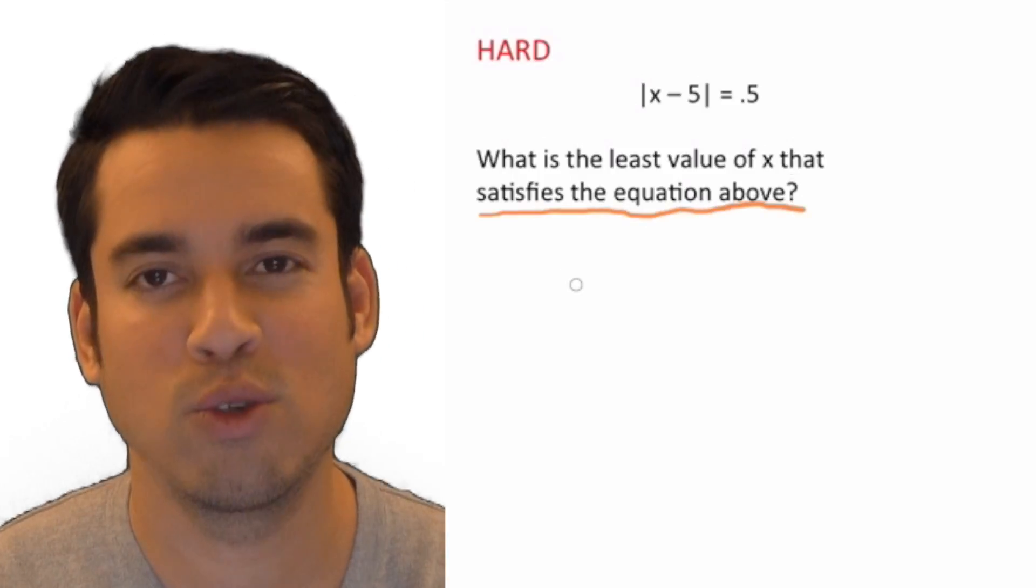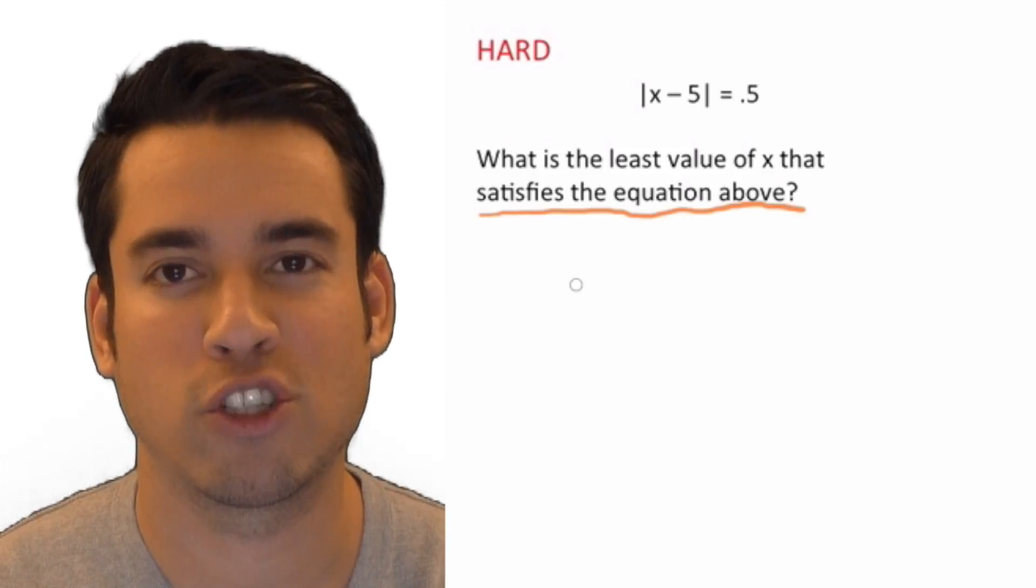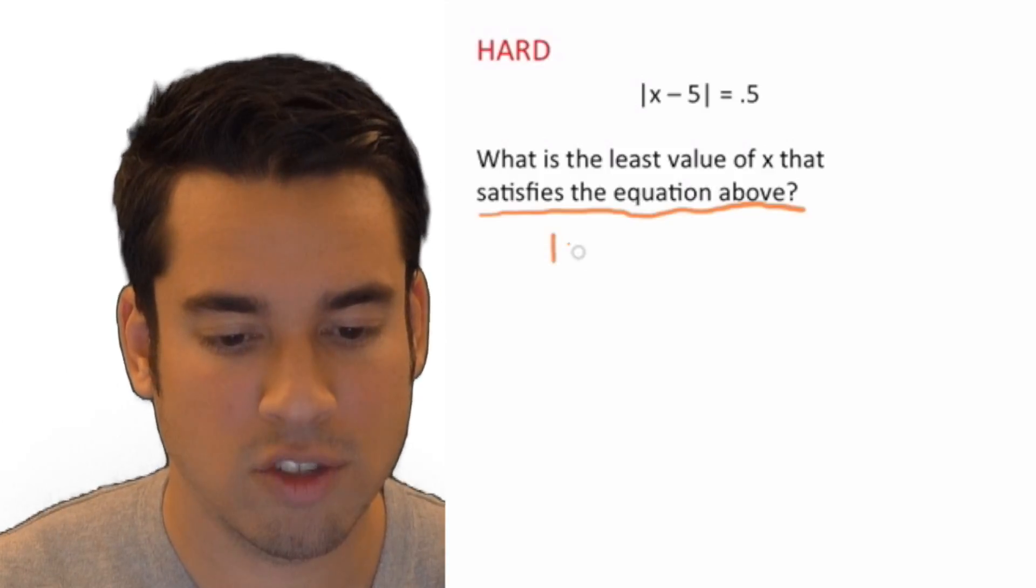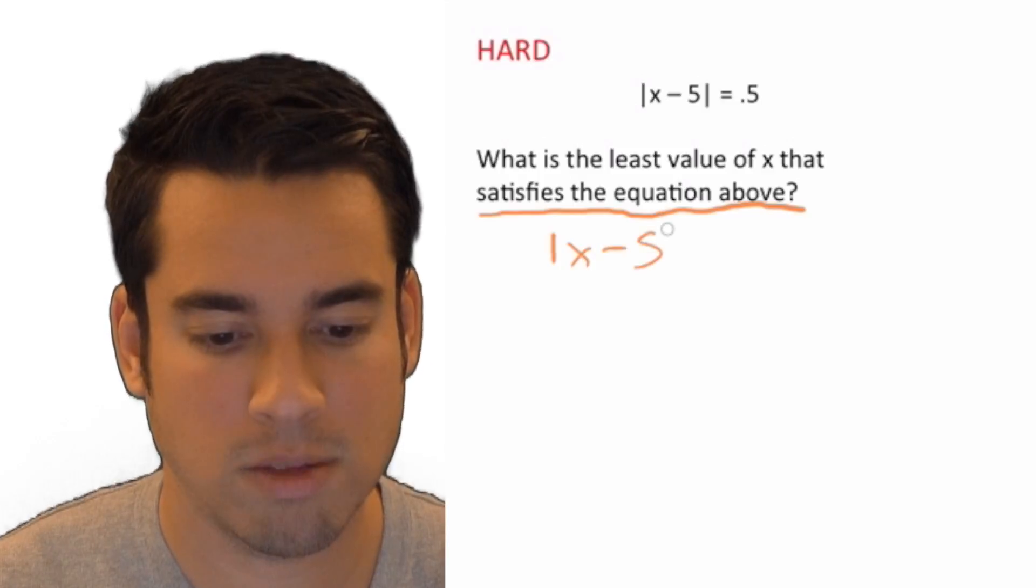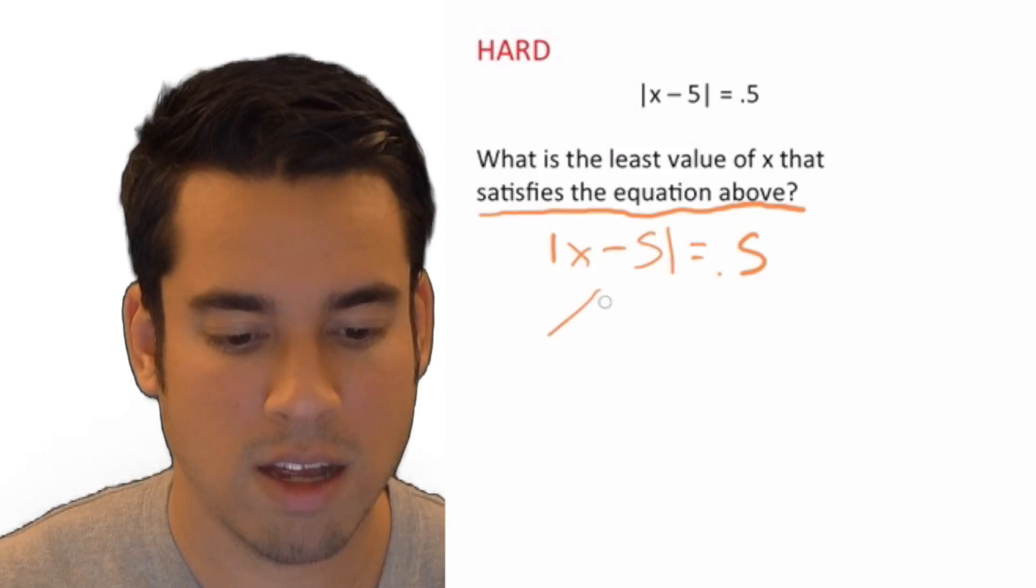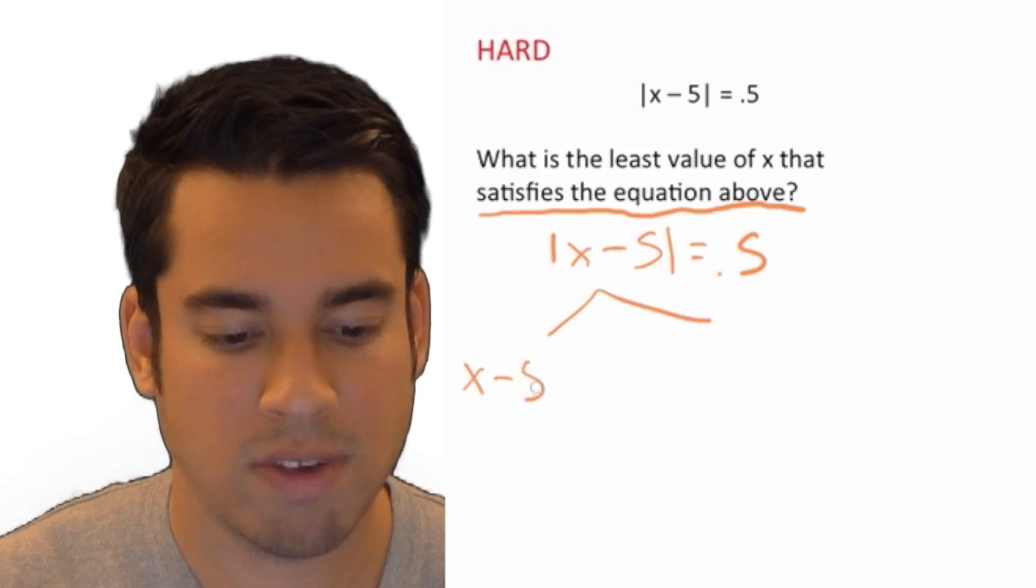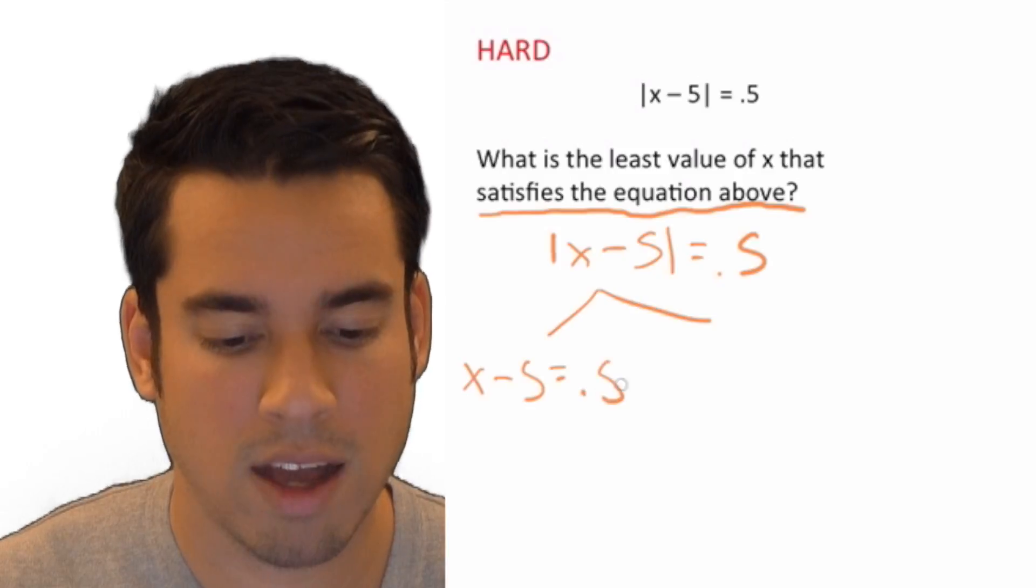So what are we going to do? Just like any absolute value function, we're going to solve it. So that means splitting it into two equations. So we've got x minus 5 equals 0.5. So let's split this guy like this. So first we have x minus 5 equals 0.5.